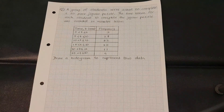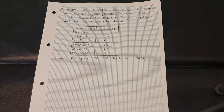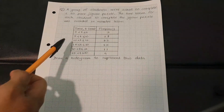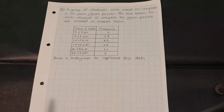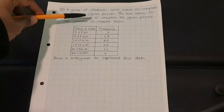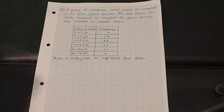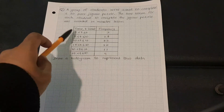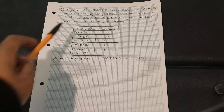These histograms are drawn for continuous data only. So time is an example of continuous data. The times are written as inequalities from 0 to 5 minutes.